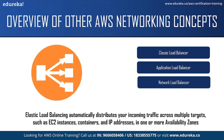Third, we have the Network Load Balancer, which is best suitable for load balancing of TCP, UDP, and TLS traffic where extreme performance is required. A Network Load Balancer routes traffic to targets within Amazon VPC and is capable of handling millions of requests per second while managing ultra-low latencies.